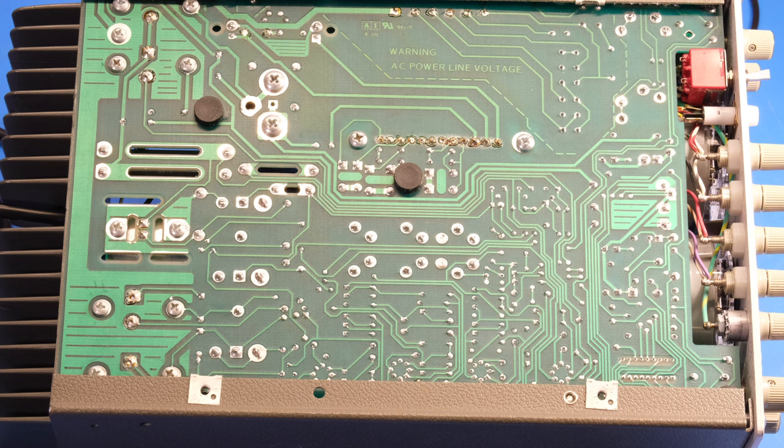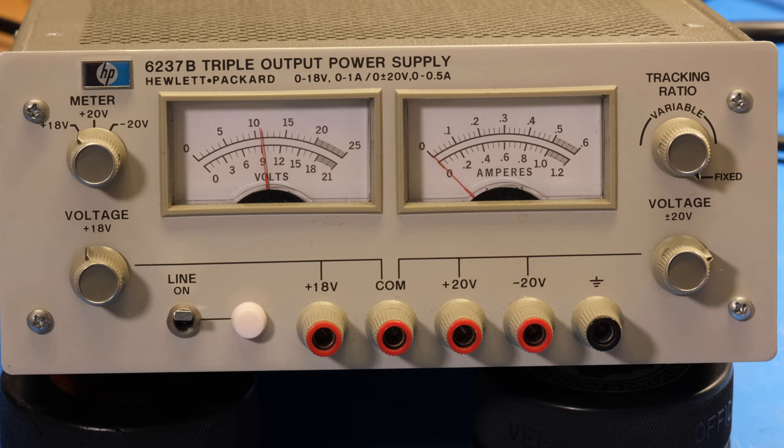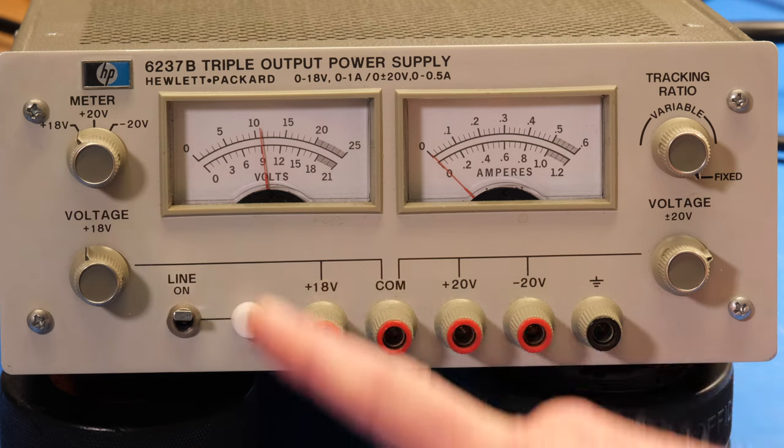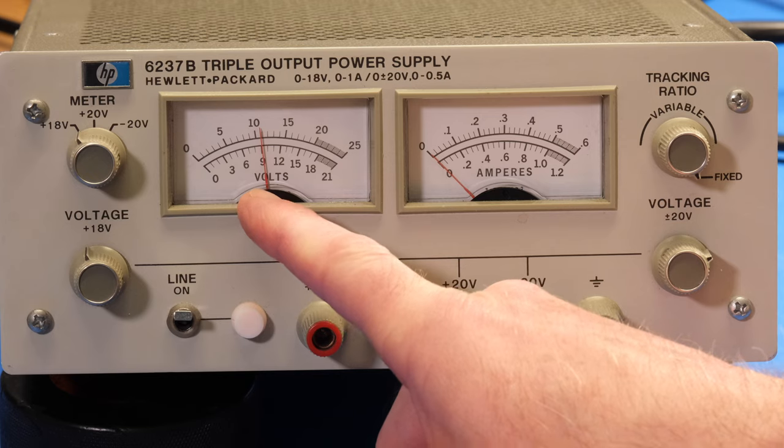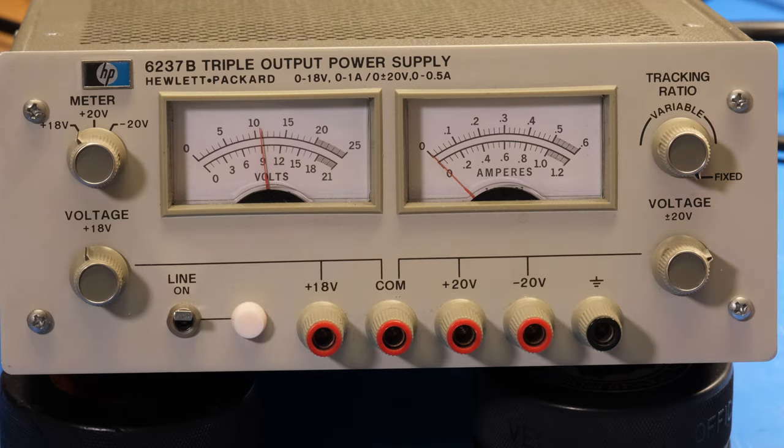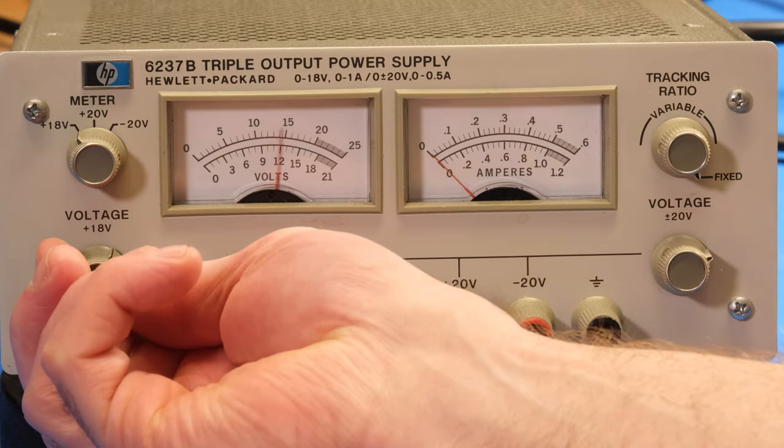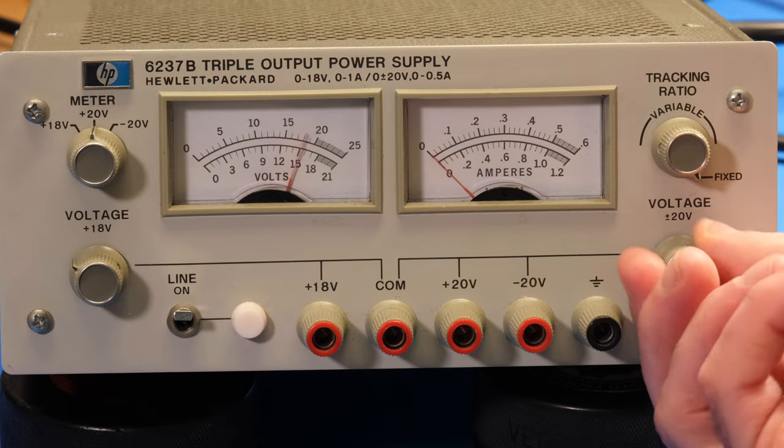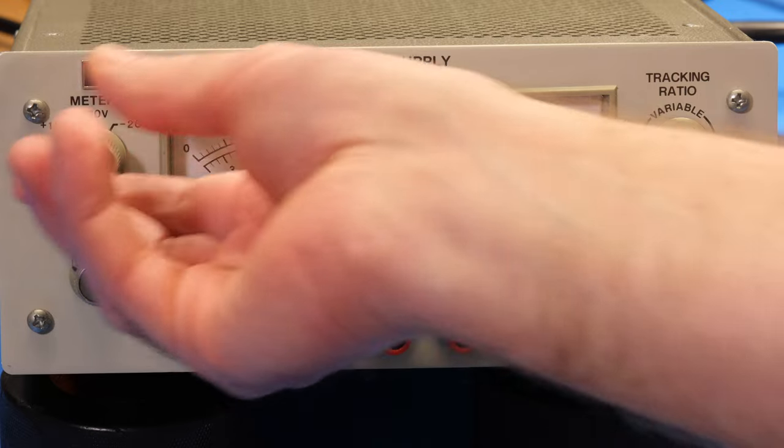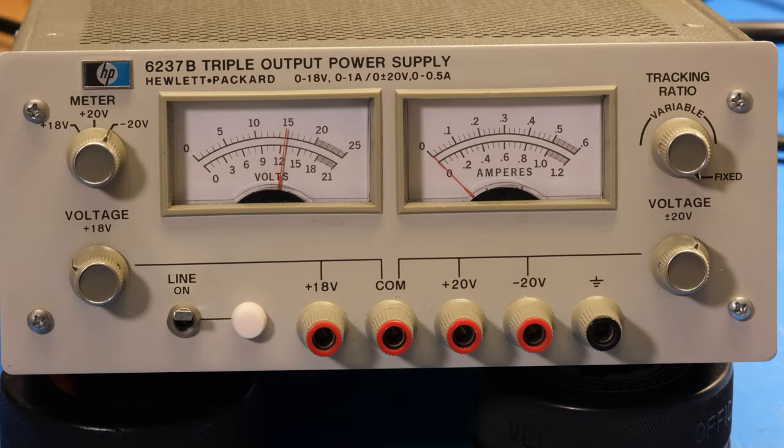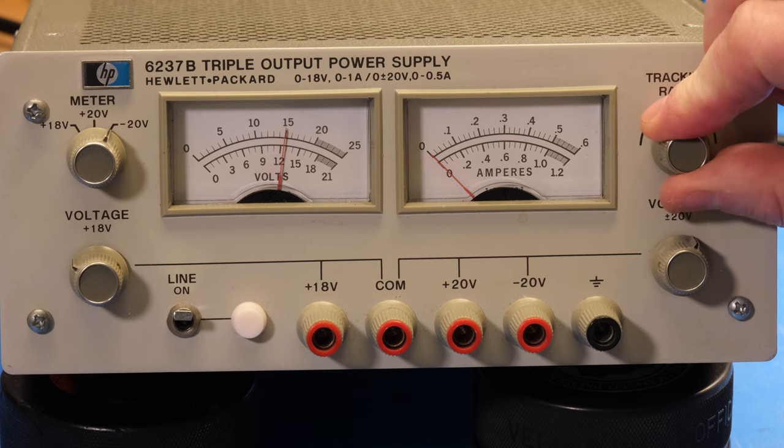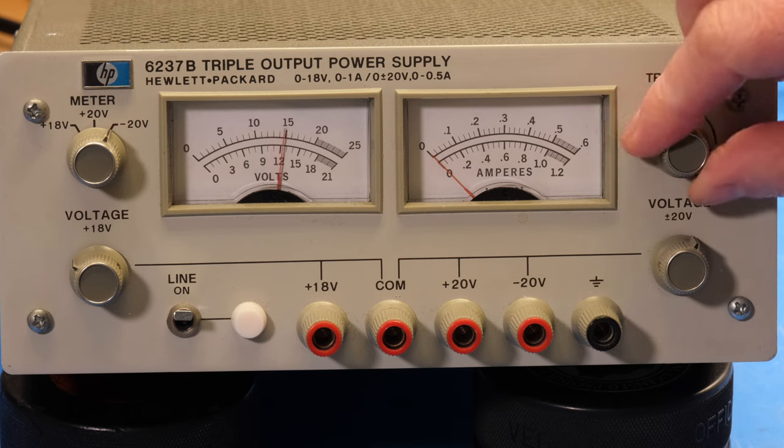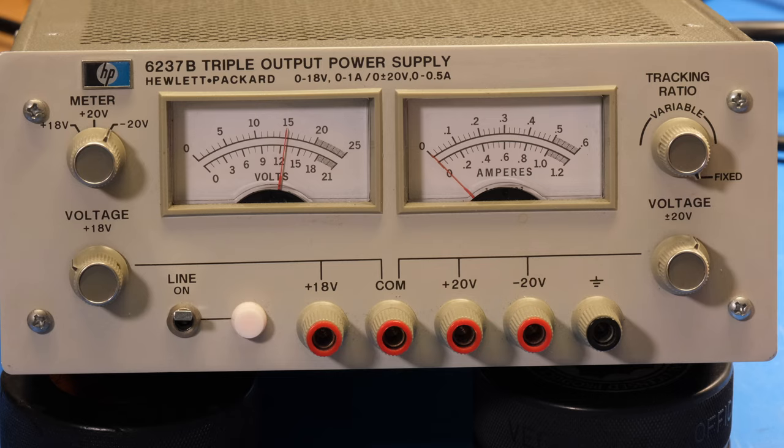The user interface on the 6237B is about as simple as it gets. This switch here selects which of the three outputs that these two meters measure. So this meter indicates the output voltage and this, the output current. And I have output number one selected, so I can adjust the output voltage with this potentiometer here. And if I select the second output, I can adjust the output voltage here. And for the third output, that normally tracks the second output. If I don't want them to track, I turn this knob here, and now I can independently vary the output voltage of the third output. I normally leave it in tracking, so that's fully clockwise.